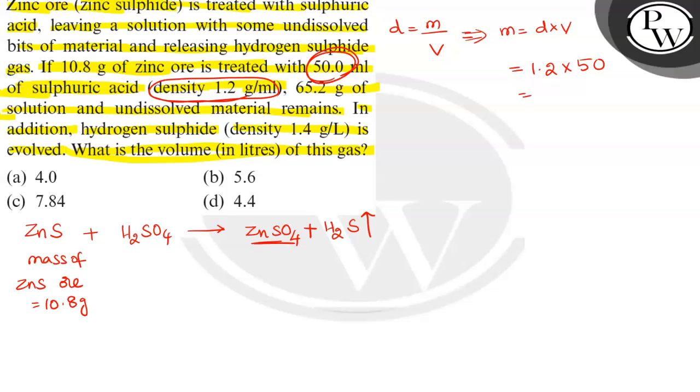So this becomes 12 into 5, which is 60. This is 60 grams. What is this? Mass of H2SO4. Mass of H2SO4 is equal to 60 grams.